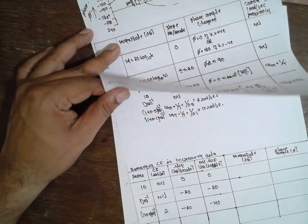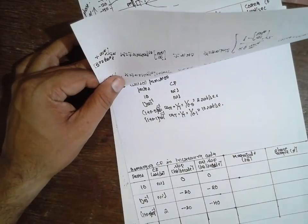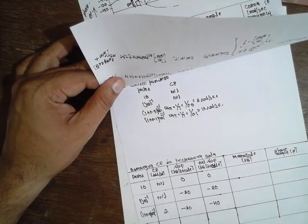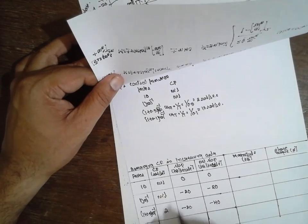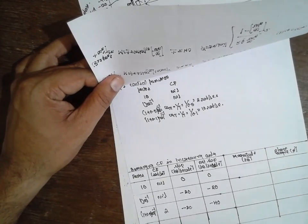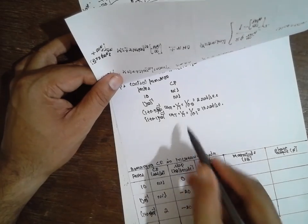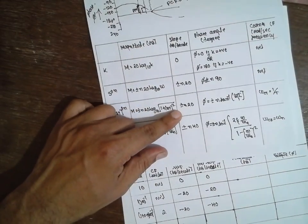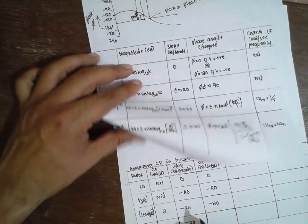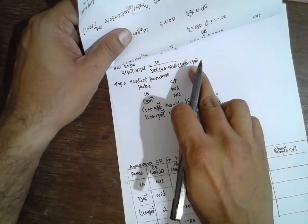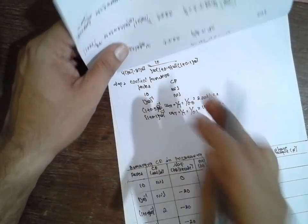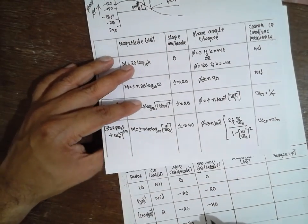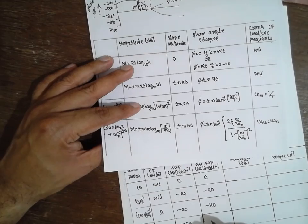Next, (1 + 0.1jω) raised to minus 1 at 10 radian per second. The slope is also minus 20 because it lies in the denominator. Net slope: minus 20 minus 20 minus 20 = minus 60.